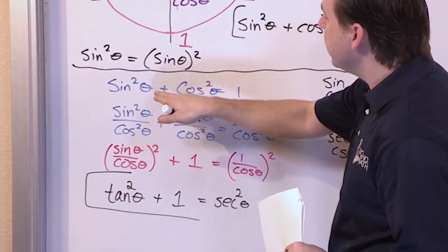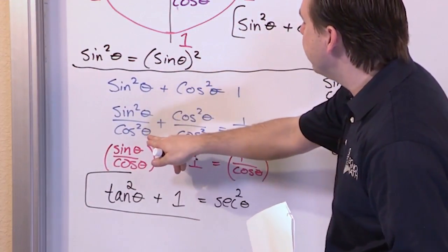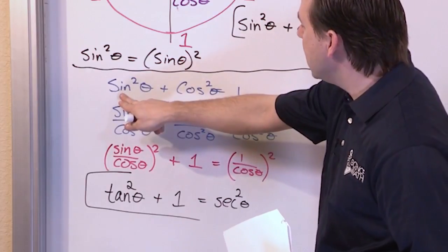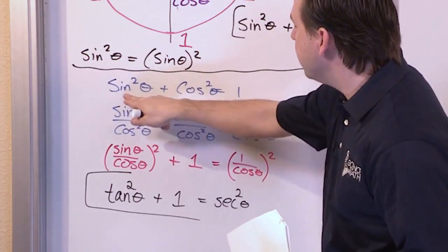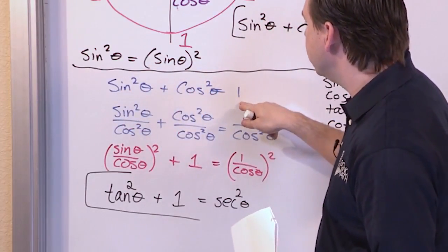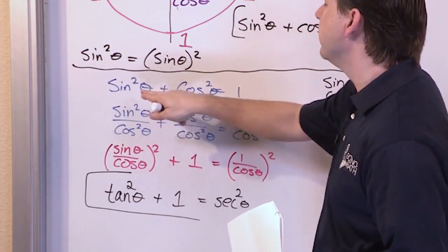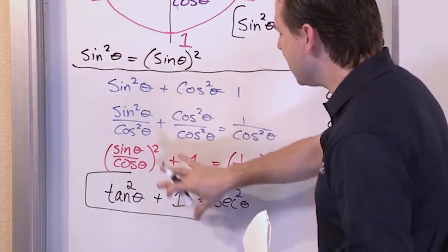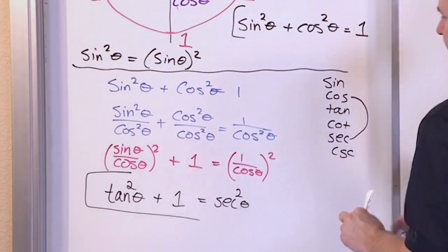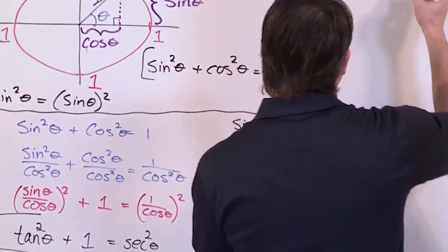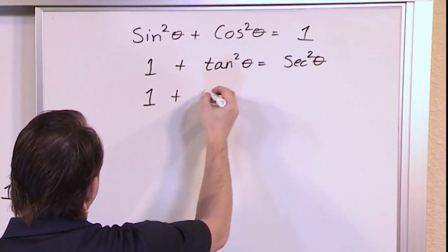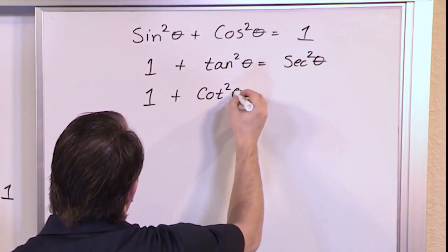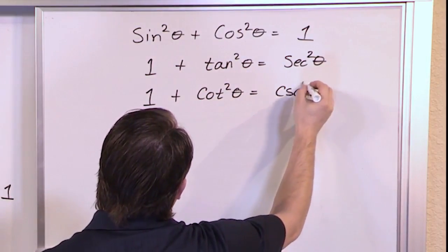If instead you start with the fundamental identity and divide both sides by sine squared — and do the same kind of simplification — you'll arrive at a different but similar result: one plus cotangent squared equals cosecant squared. These are the three Pythagorean trig identities.